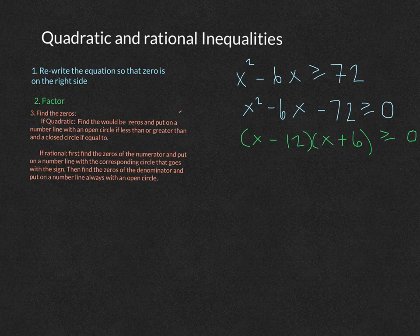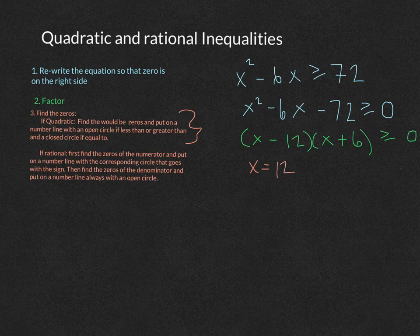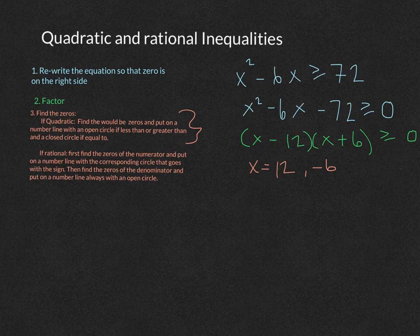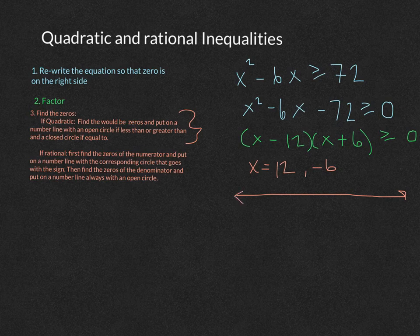So let's start with the quadratic here. It says find the zeros. So that means if I were to have an equation, I would have x equals 12 and x equals negative 6. Those are the zeros of my equation. Then you're going to put those zeros on a number line.